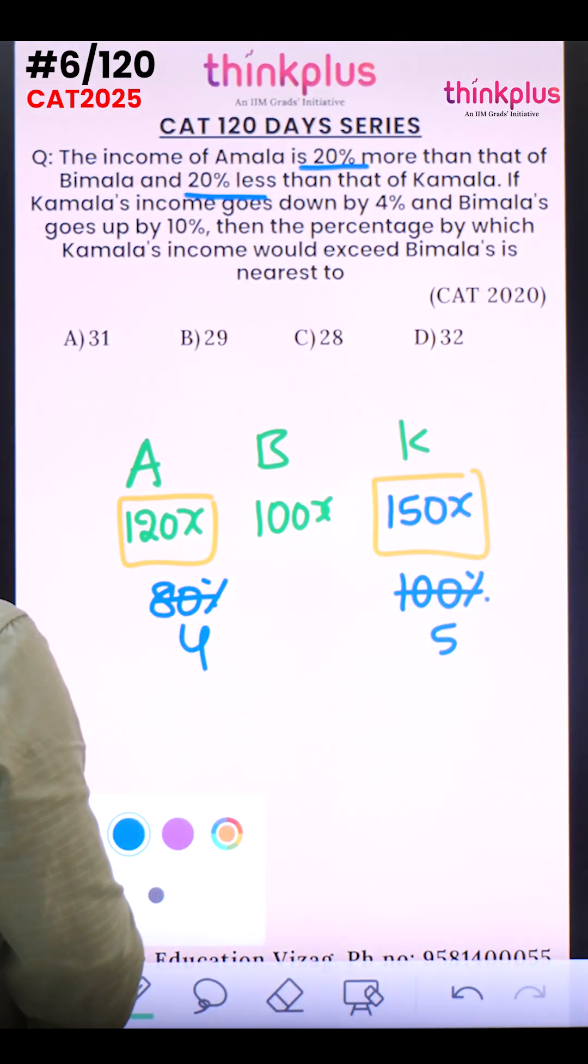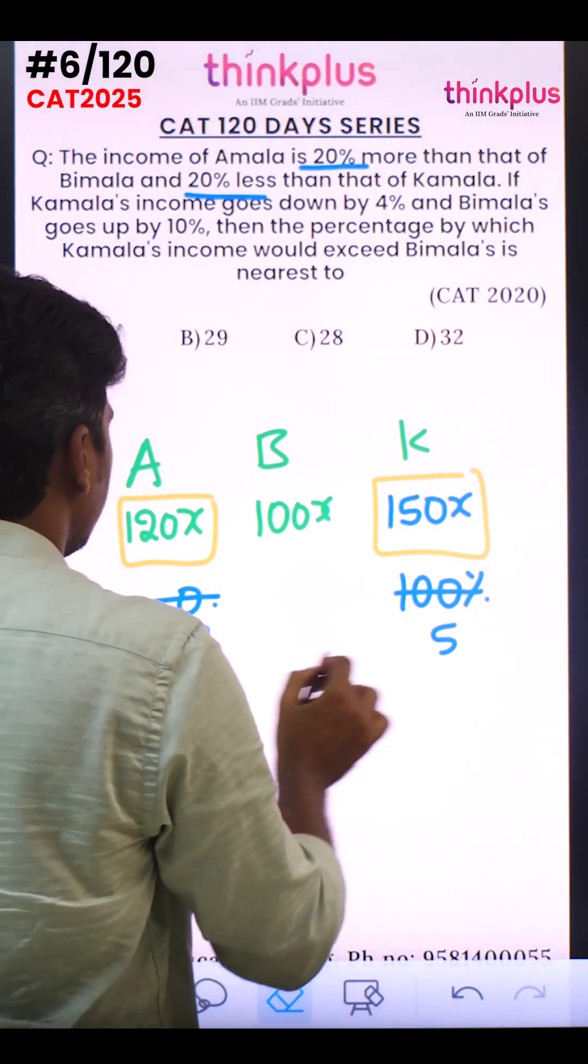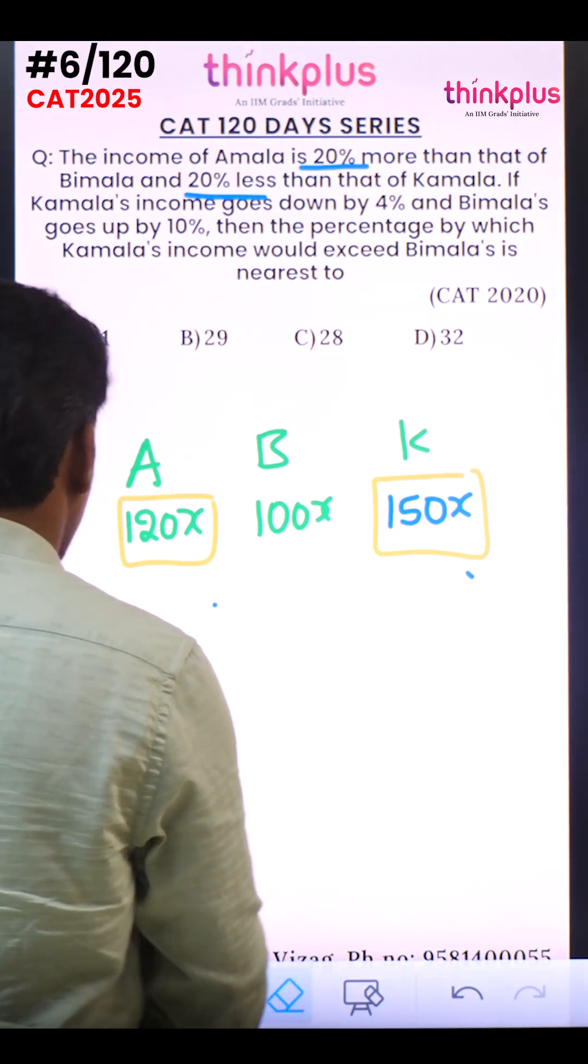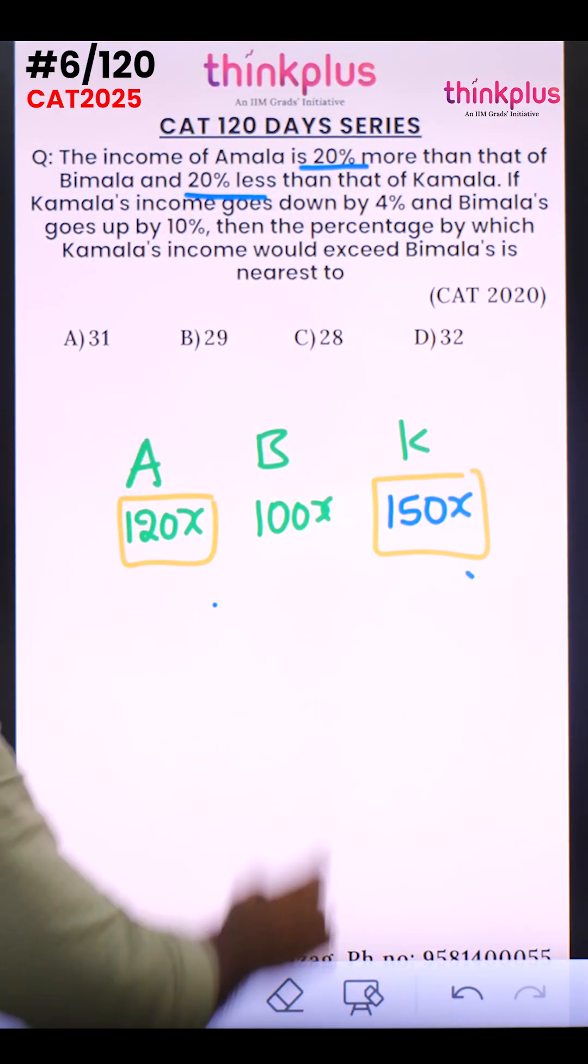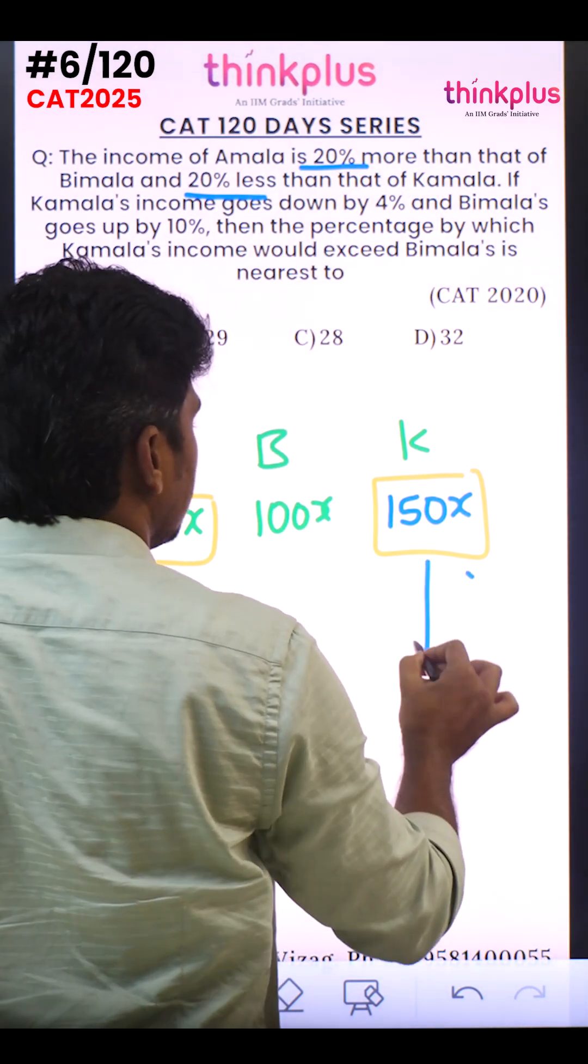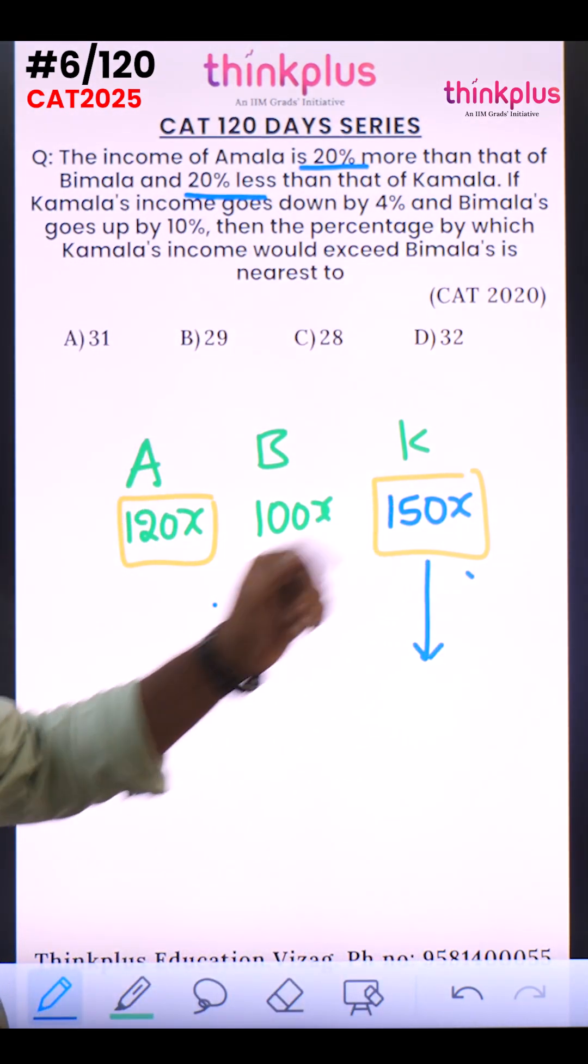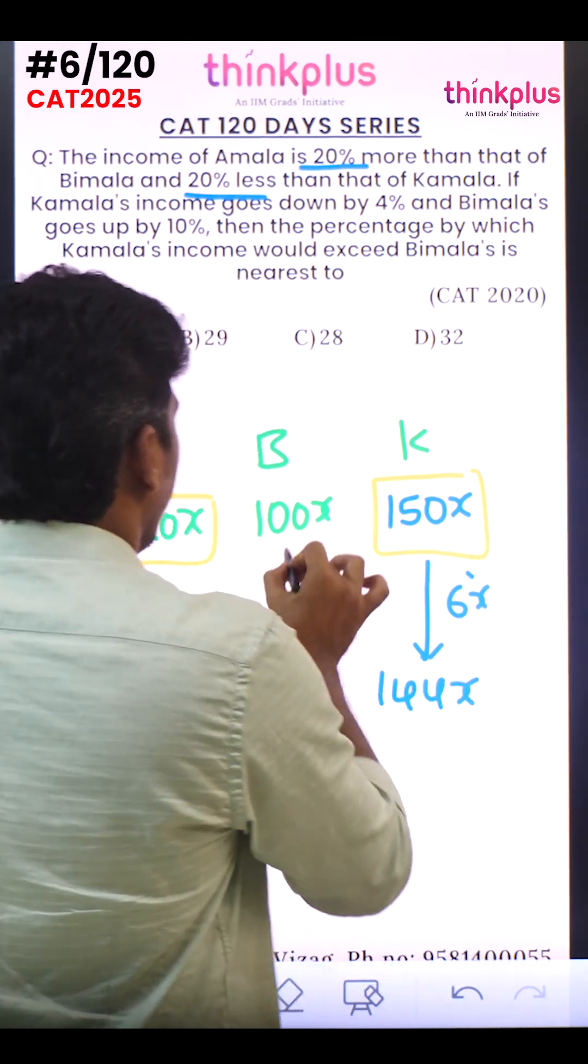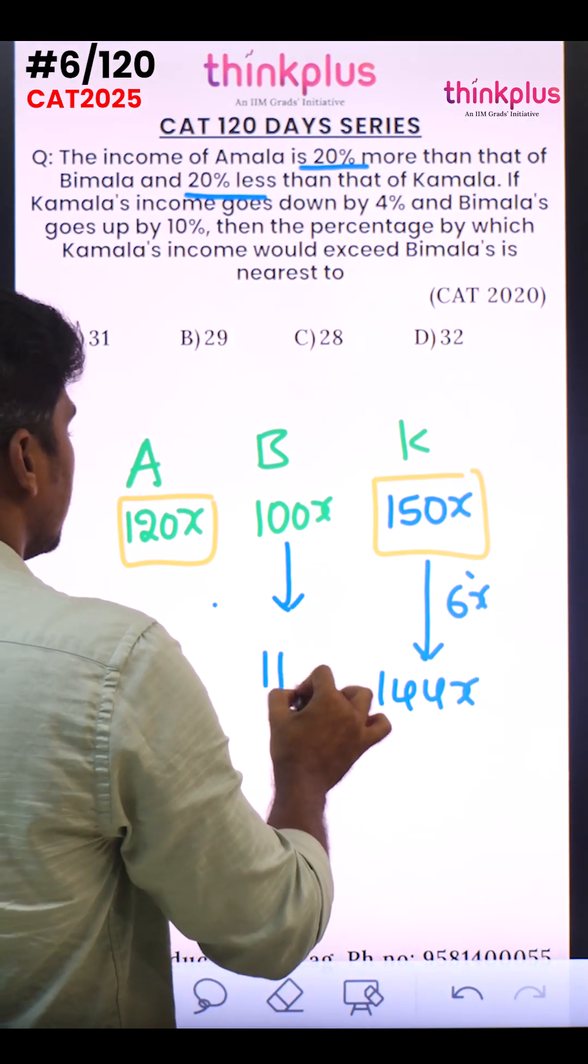Now I compared at this moment. Now they're asking about the status after some time. It is given that Kamala's income goes down by 4 percentage. 4 percentage of 150x is 6x. 6x is down, this becomes 144x. And Beamla's income is increased by 10%. This will become 110x.